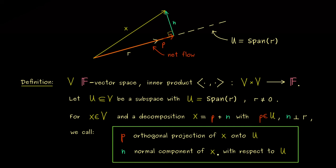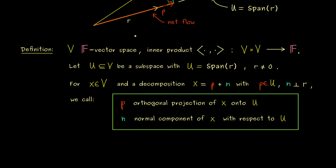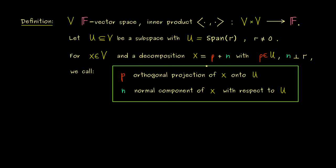So first, p is called the orthogonal projection of x onto U. So of course orthogonal projection here only makes sense if we mention the subspace. And on the other hand, n is called the normal component of x. And also here we would usually say with respect to the subspace U.